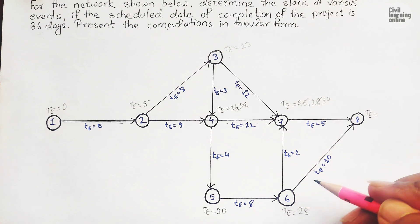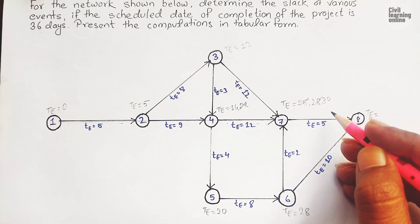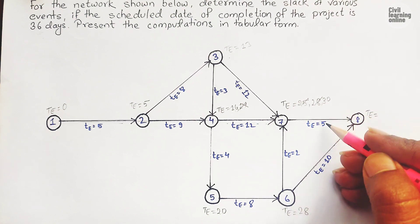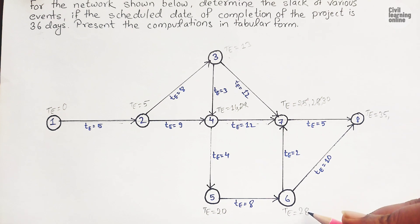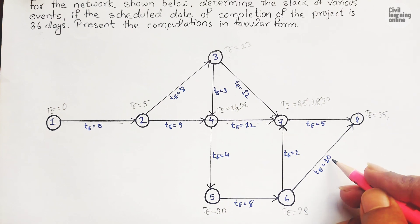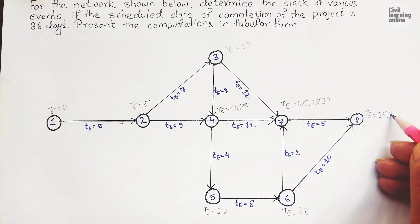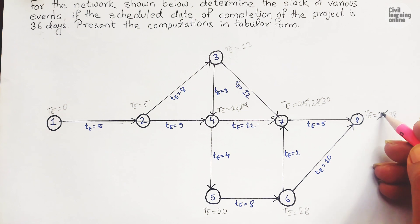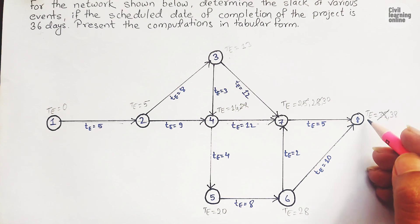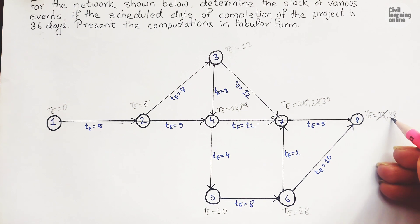TE of event eight: event eight has two predecessors, seven and six. Thirty plus five equals thirty-five, and twenty-eight plus ten is thirty-eight. Maximum of these two is thirty-eight, so TE of event eight is thirty-eight.